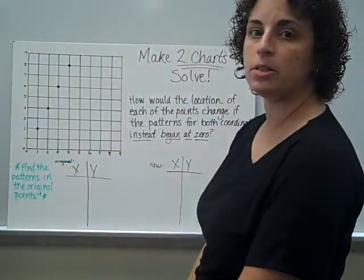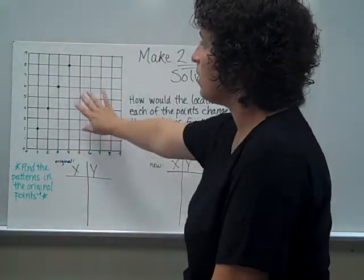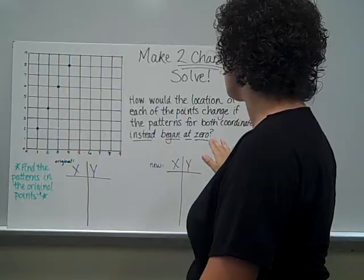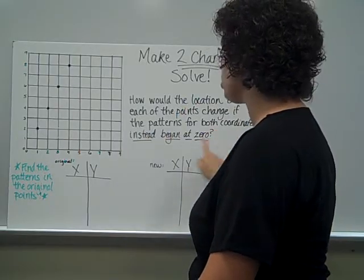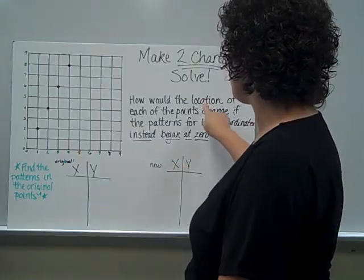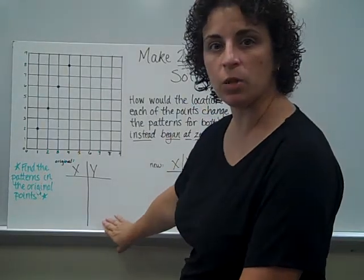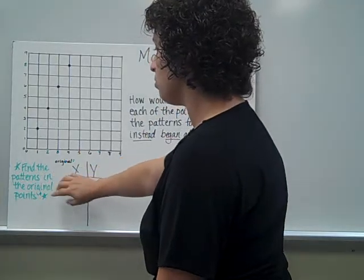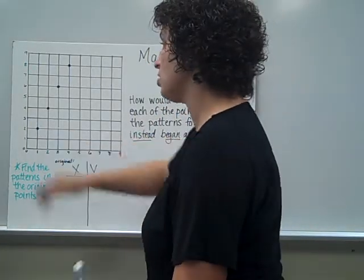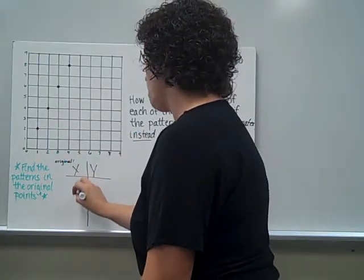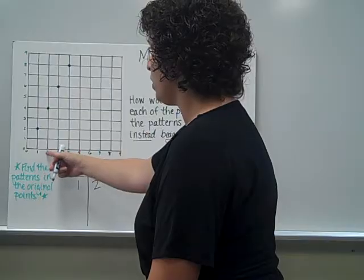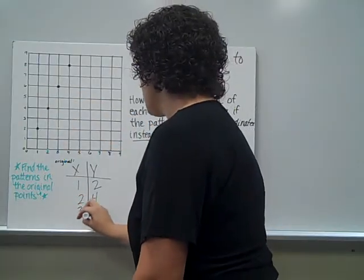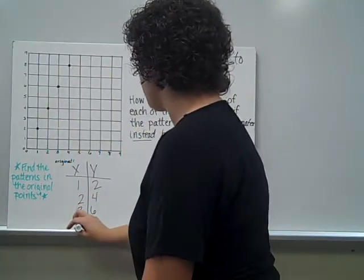This problem needs two charts to solve. I have a coordinate grid here with some points located on there, and the question is asking: how would the location of each of the points change if the patterns for both coordinates instead begin at 0? First, I want to understand where the points are located now. My first point is located at 1, 2. My second point is at 2, 4. Third point is at 3, 6. And my last point is located at 4, 8.